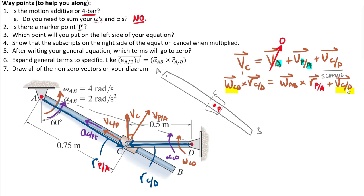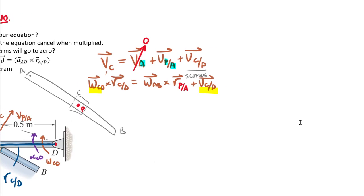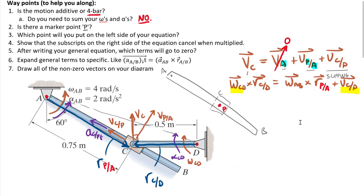Before jumping into acceleration, let's cross-check the equation subscripts — remember we can multiply subscripts and things should cancel out. On the left we have C. On the right we have A, then P relative to A, then C relative to P. A cancels with A, P cancels with P, and we get C equals C. That answers the question about showing the subscripts cancel when multiplied. We also got rid of zero terms, expanded our expressions, and drew the vectors.